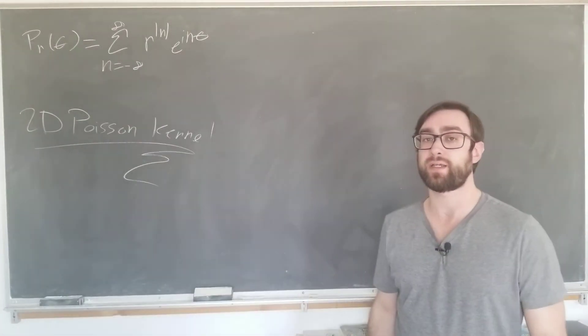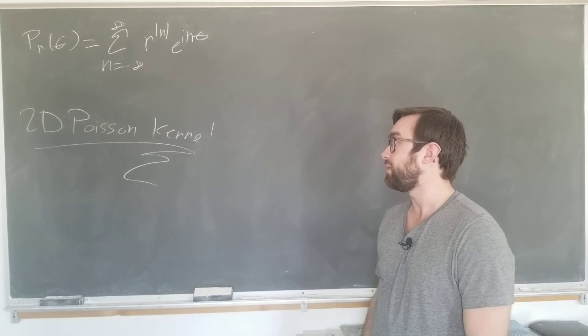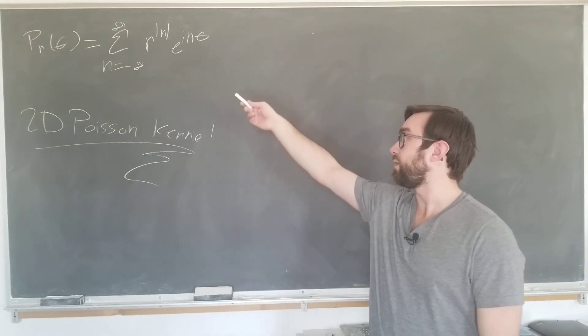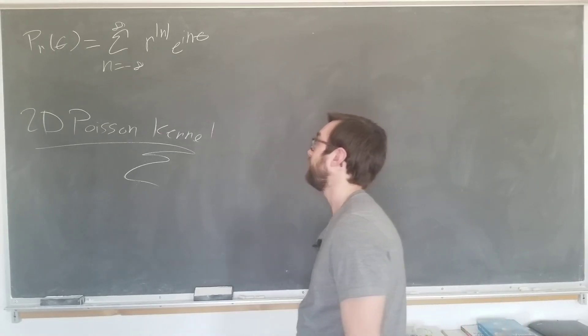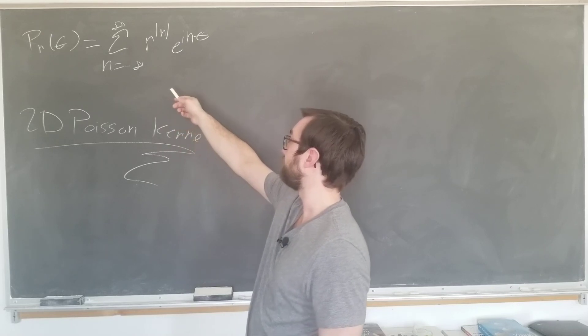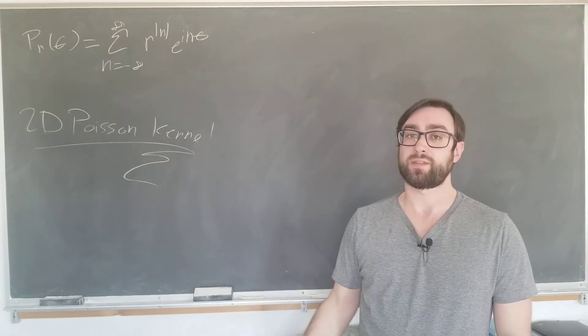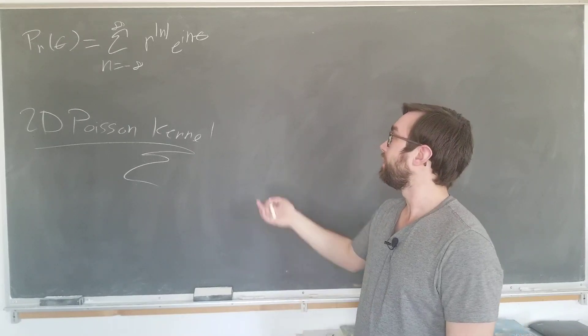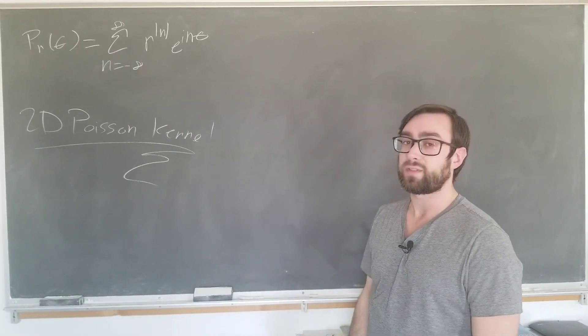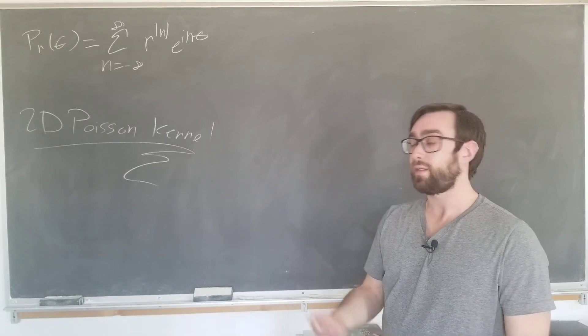Hi everyone, welcome to Mostly Math. Today I'm going to talk to you about the two-dimensional Poisson kernel written up here as p_r of theta equal to the sum as n goes from minus infinity to infinity of r to the absolute value of n, you'll see why that's important in a second, times e to the i n theta.